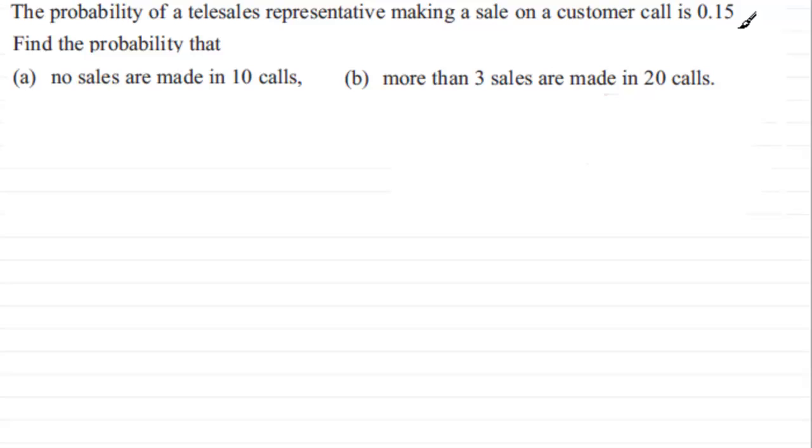And we've got two questions here to answer. We've got to find the probability that no sales are made in 10 calls, and in part B, more than three sales are made in 20 calls.